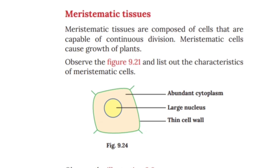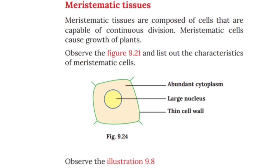Next, meristematic tissue. Meristematic tissue is composed of cells that are capable of continuous division. Meristematic cells cause growth of the plant; they are capable of continuous cell division.